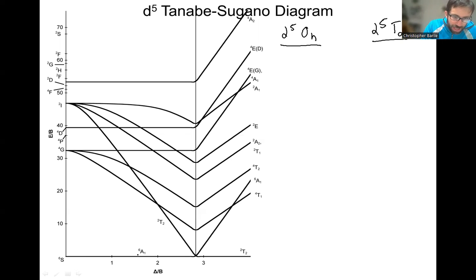Those atomic term symbols turn into molecular term symbols once you incorporate a ligand field and get into octahedral or tetrahedral symmetry. The ground state is sextet A1 or A1G if you're in octahedral, but this is for when you have relatively weak ligands.